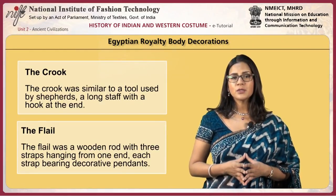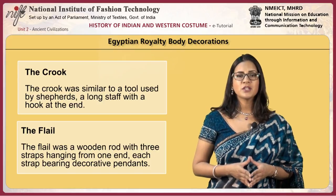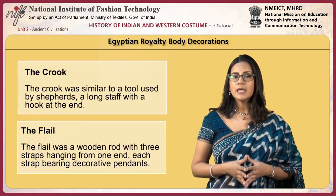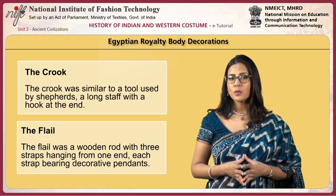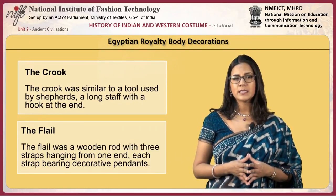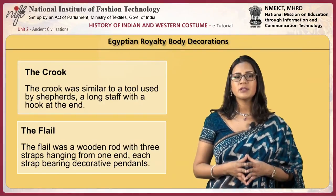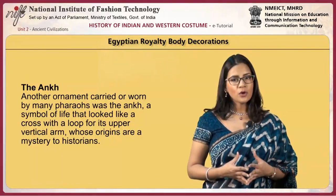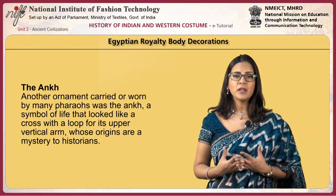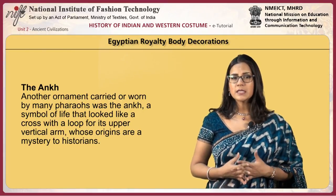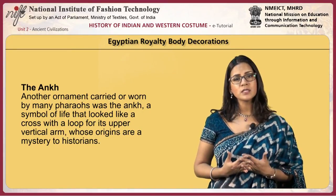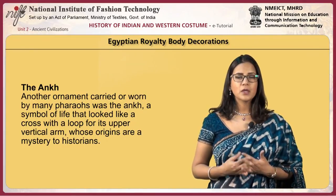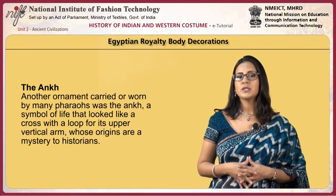The crook was similar to a tool used by shepherds — a long staff with a hook at the end. The flail was a wooden rod with three straps hanging from one end, each strap bearing a decorative pendant. Another ornament carried or worn by many pharaohs was the Ankh, a symbol of life that looked like a cross with a loop for its upper vertical arm, whose origins are a mystery to historians.